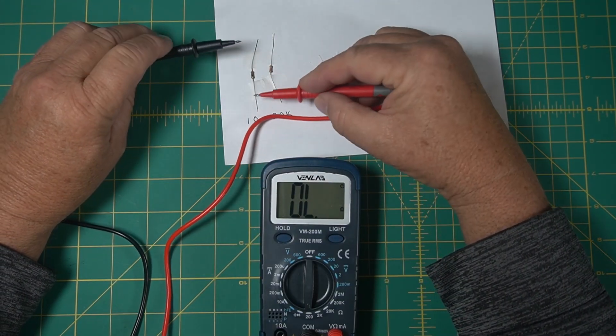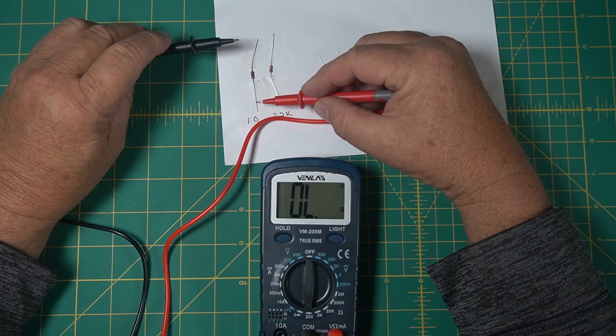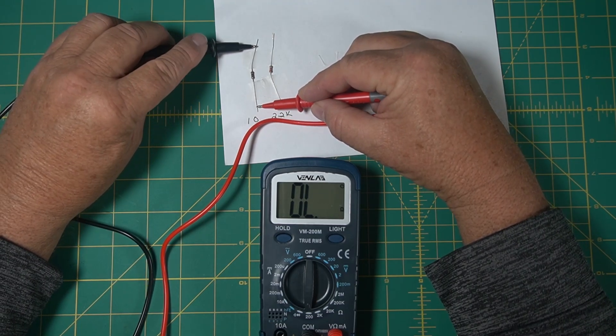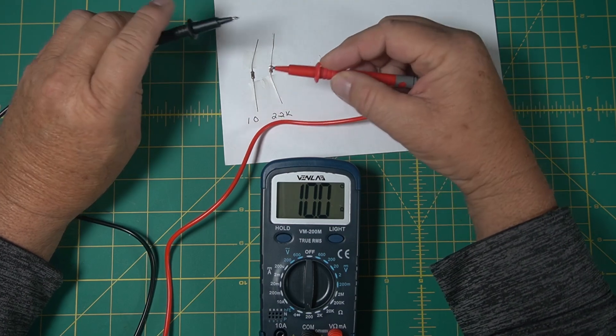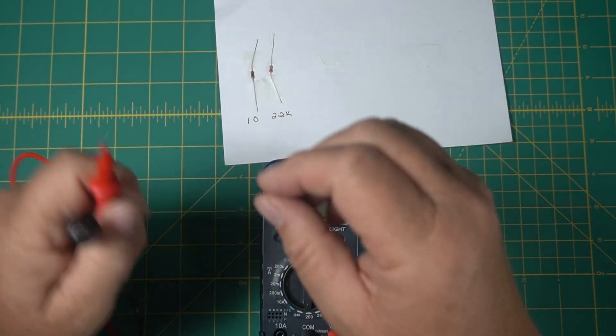Let's just see if this will read this. I think you can see the screen. Touch those and it shows 10 ohms.